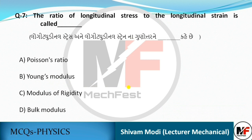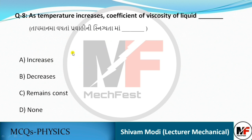The ratio of longitudinal stress to longitudinal strain — friends, that ratio is called Young's modulus (modulus of elasticity). Note: the ratio of lateral strain to longitudinal strain is Poisson's ratio.